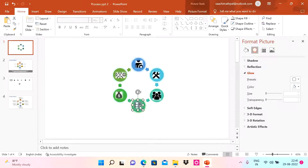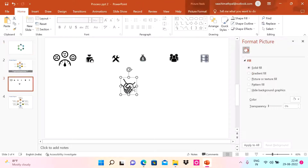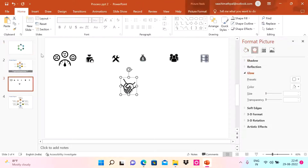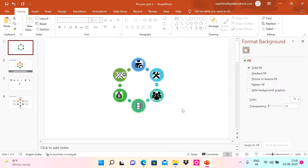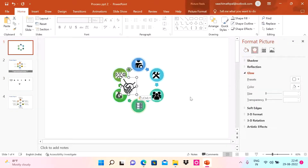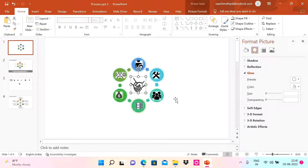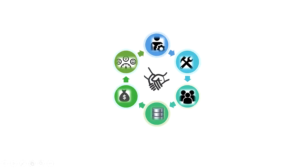Reduce the icon size a little bit. Since this process is about collaboration, I'm adding one more icon at the center of the diagram. Now if I run the slide show, the process diagram is looking good.